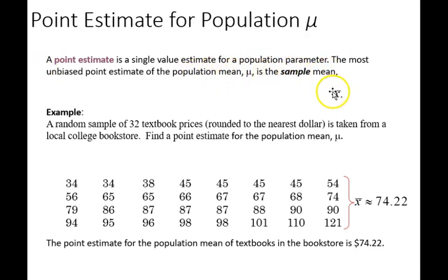Mu, the sample mean, is X bar. Here's an example. We have a random sample of 32 textbook prices from a college bookstore, and we want to find a point estimate for the population mean. The best estimate would be the sample mean, $74.22.